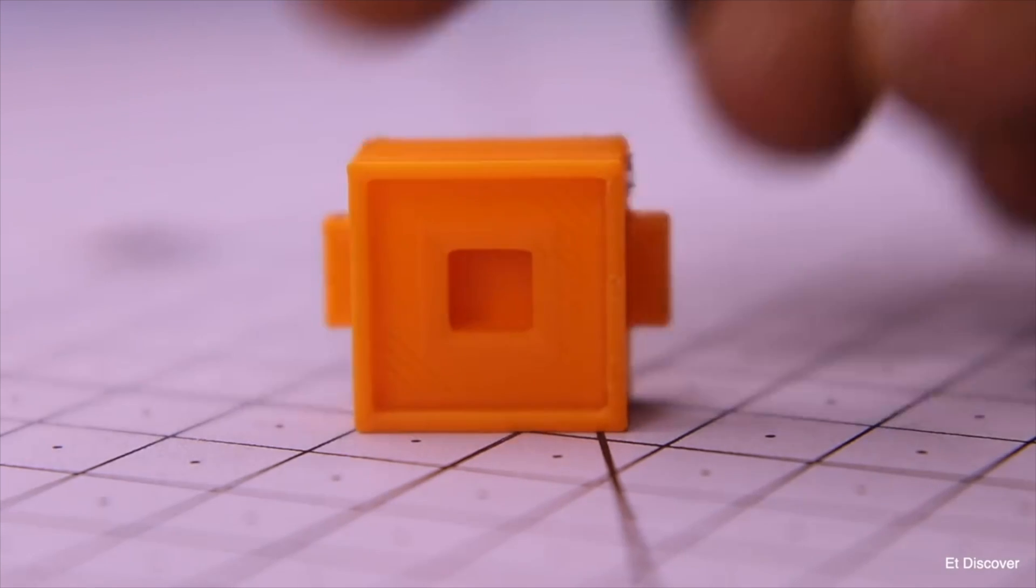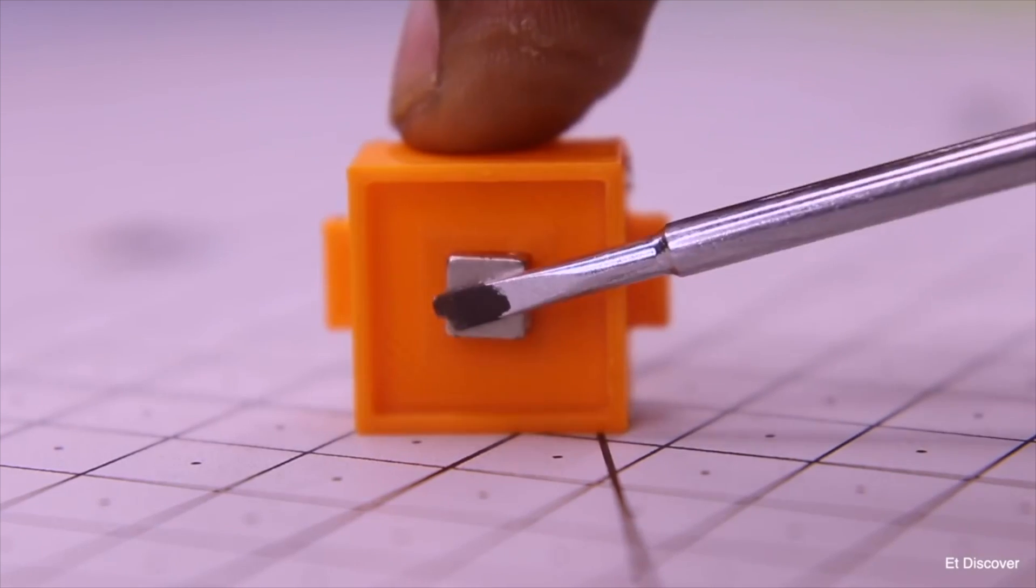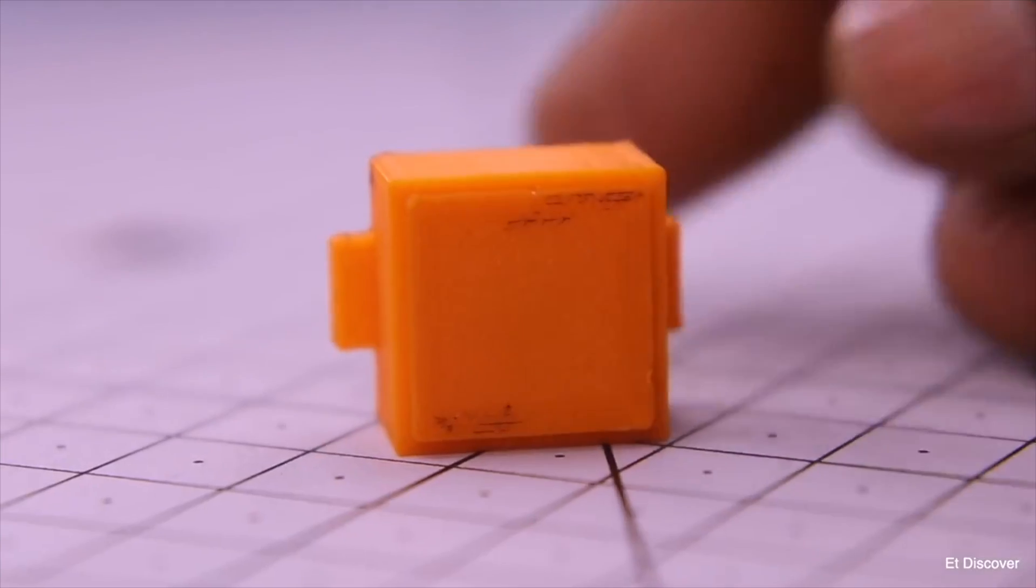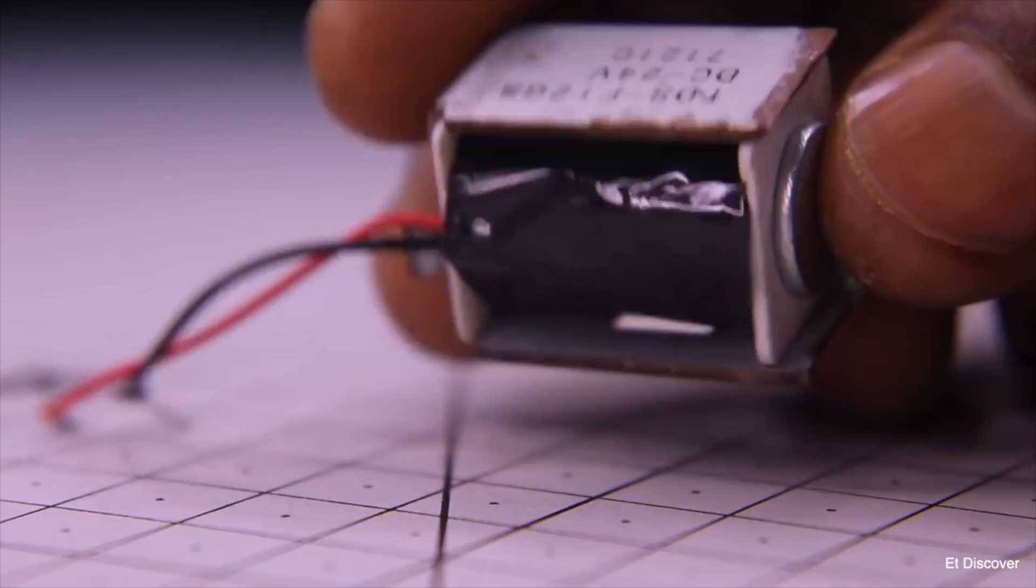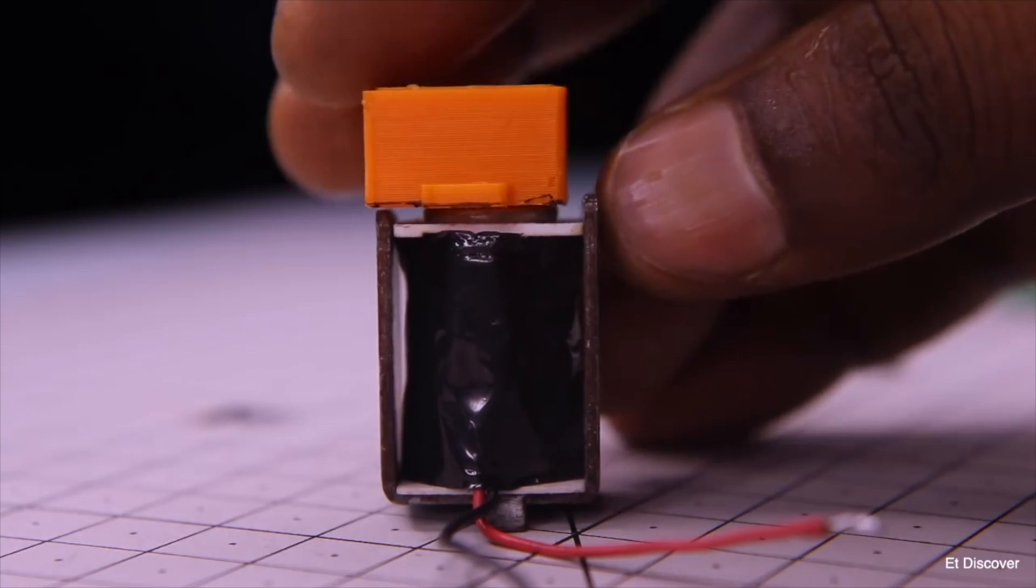This 3D printed part has a special role in this project. Inside this 3D part, I insert a neodymium magnet and then close the top lid. I'm going to use an electromagnet here, and I'll place the neodymium 3D printed part on top of this electromagnet.